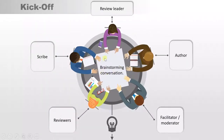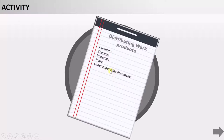The documents we distribute include log forms, checklists, different materials, topics which we have to review, and other supporting documents. Let's take one example so you understand how important this particular process is — we will talk about the checklist.